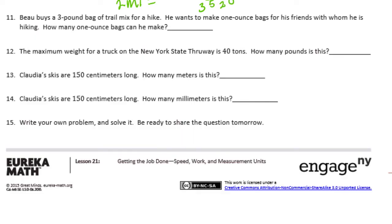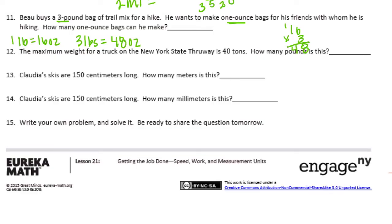Number 11: Bo buys a 3-pound bag of trail mix for a hike. He wants to make 1-ounce bags for his friends. How many 1-ounce bags can he make? In 1 pound there are 16 ounces, so for 3 pounds we need to do 3 times 16. 6 times 3 is 18, carry the 1, 3 times 1 is 3 plus 1 is 4 — that would be 48 ounces, which means he could make 48 one-ounce bags.